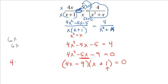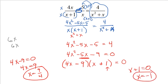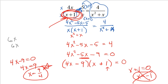Let's check: if I plug in negative 1 into the original problem, I get a 0 in the denominator — that's an extraneous solution. So x equals 9 fourths is the one and only answer.